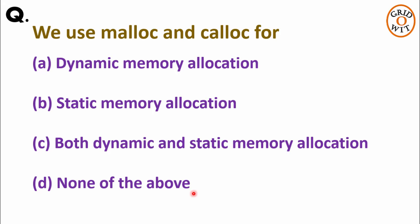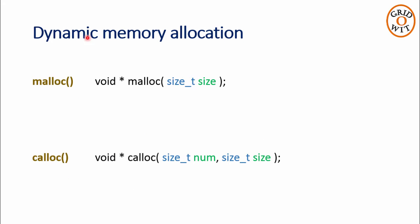Now, what is dynamic memory allocation? The process of allocating memory at runtime is known as dynamic memory allocation. The malloc and calloc are the functions which are used to implement dynamic memory allocation. The malloc function allocates the requested size of bytes and returns a void pointer pointing to the first byte of the allocated space.